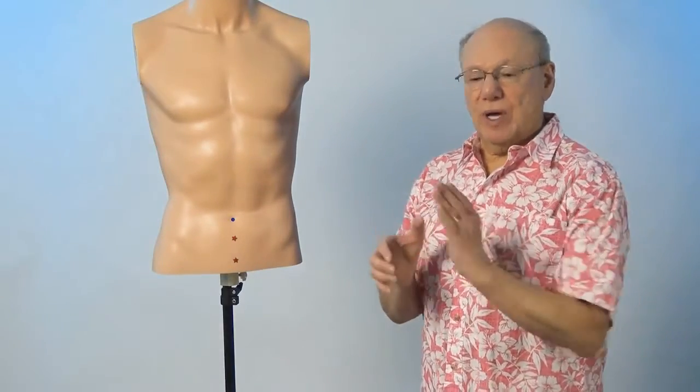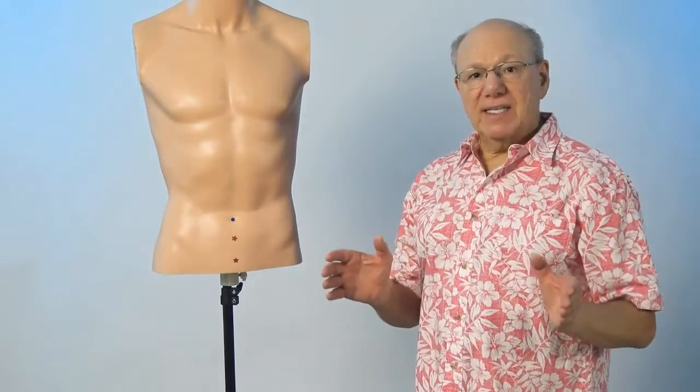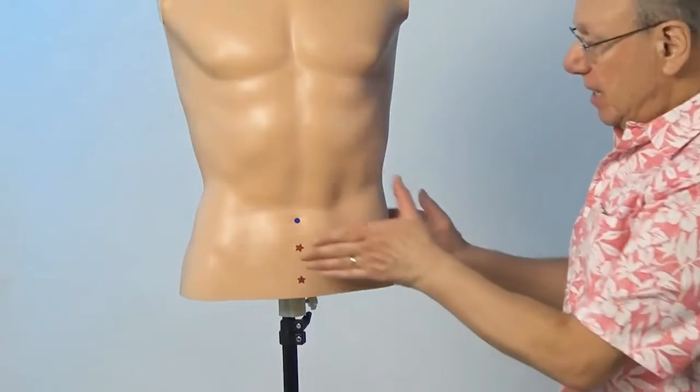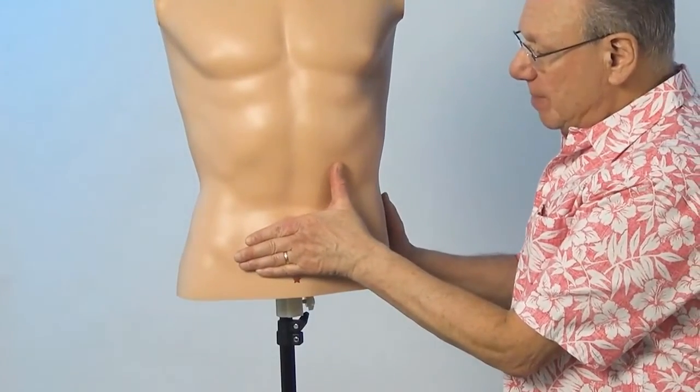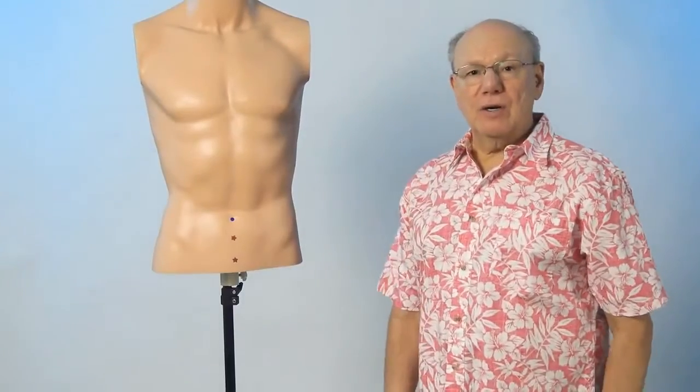Conception Vessel 3 is located the width of one hand below your belly button. To find Conception Vessel 3, put your hand just under your belly button and find the point that is just below your small finger.